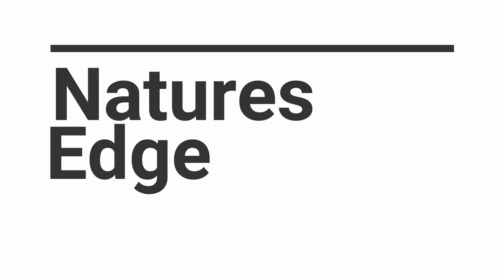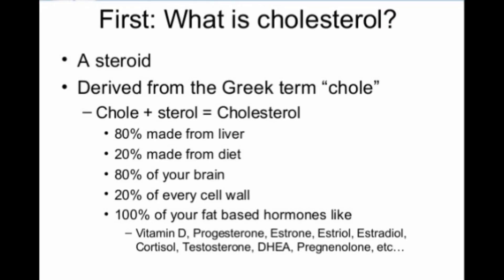I found some slides and put them together to convey this information. So the first question is: what is cholesterol? These percentages will definitely vary to some degree, but this gives you a general idea. It is a steroid — roughly 80% is made by the liver and roughly 20% comes from the diet. The brain is composed of roughly 80% cholesterol, every cell wall in the body has cholesterol in it, and the body makes hormones from cholesterol such as vitamin D, estrogen, testosterone, and DHEA.